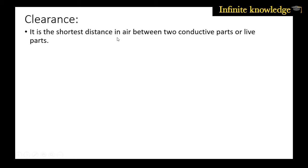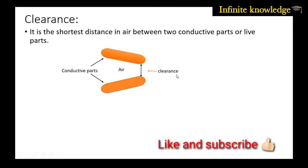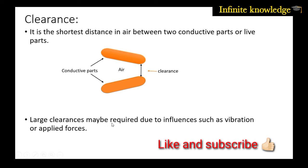First of all, what is clearance? It is the shortest distance in air between two conductive parts or live parts. You can see that these are two conductive parts with air present in between. This distance represents the shortest distance in air between two conductive parts, so it's called clearance.